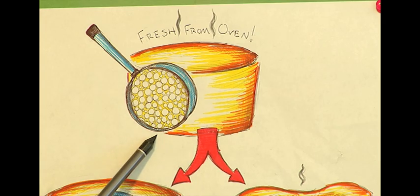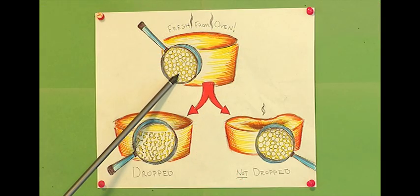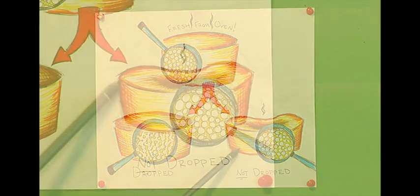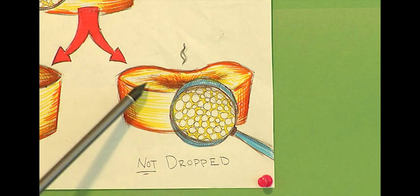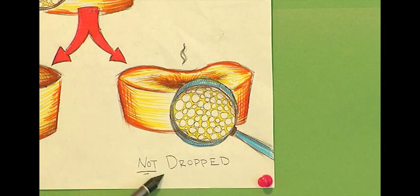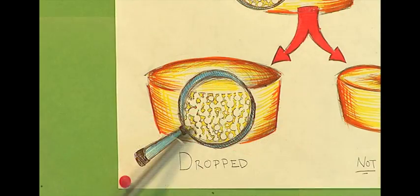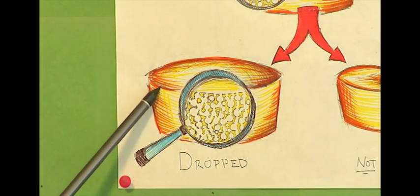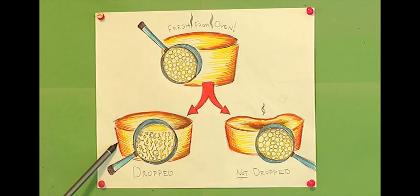When the cake comes out of the oven, the bubbles of the sponge cake are filled with hot steam. What happens if you don't drop the cake is the steam inside the bubbles will condense and the bubbles get smaller and the cake collapses because it doesn't have anything to support itself. But if you drop the cake, a shockwave is sent from the bottom to the top of the cake and it breaks some of the walls of the bubbles and allows air to flow in and support the cake and keep it light and moist.